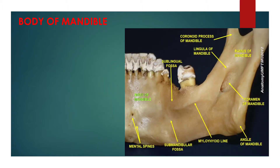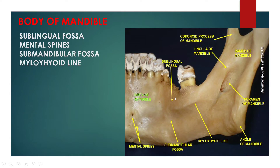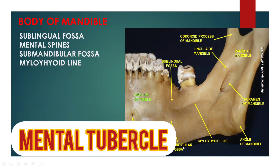The body of the mandible is curved and the front part gives structure to the chin. It has two surfaces and two borders. From the outside, the mandible is marked in the midline by a faint ridge indicating the mandibular symphysis, the line of junction of the two pieces of which the bone is composed at an early period of life. This ridge divides below and encloses a triangular eminence, the mental protuberance, the base of which is depressed in the center but raised on either side to form the mental tubercle.